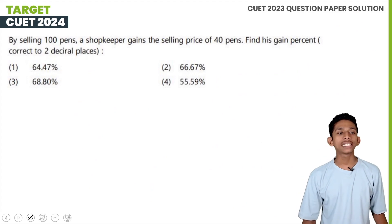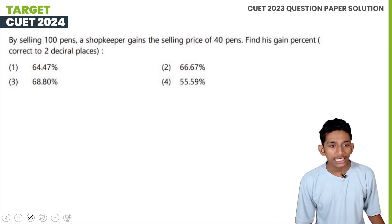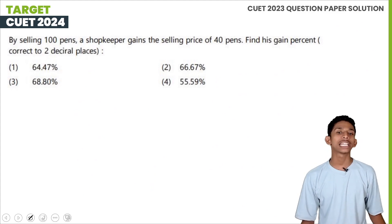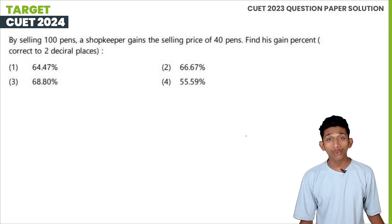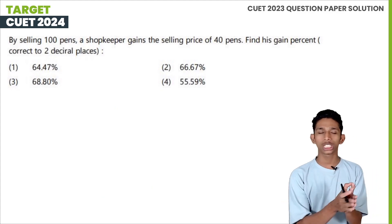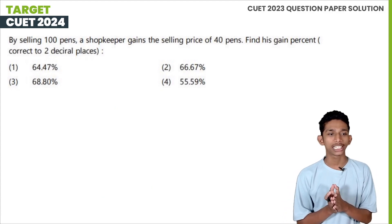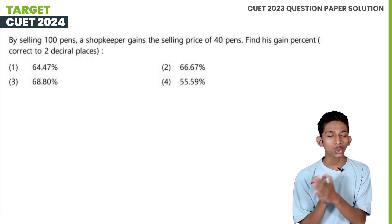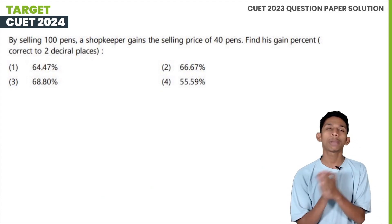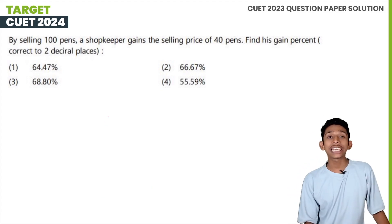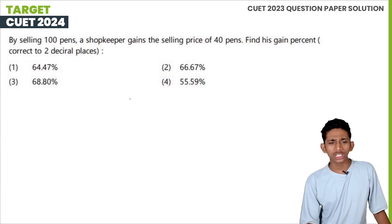Next question: by selling 100 pens, a shopkeeper gains the selling price of 40 pens. Find his gain percentage, correct to 2 decimal places. By selling 100 pens, that means 100 SP.